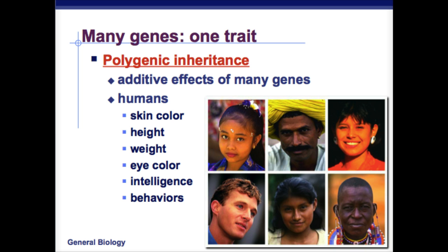There are also traits that rely on many different genes. Those traits are things like your skin color, your height, your weight, eye color, intelligence, and behavior. That means there are many genes that are going to code for one specific trait.